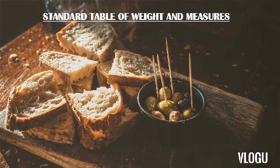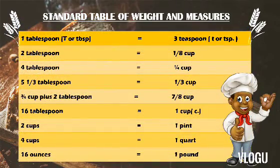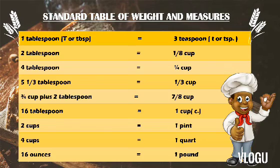Here is the standard table of weights and measures. One tablespoon (TBSP) is equal to three teaspoons. Two tablespoons is equivalent to one-eighth cup. Four tablespoons is equivalent to one-fourth cup. Five and one-third tablespoons is one-third cup. Three-fourths cup plus two tablespoons is equal to seven-eighths cup. Sixteen tablespoons is equivalent to one cup. Two cups is equal to one pint. Four cups is equivalent to one quart. And sixteen ounces is equivalent to one pound.